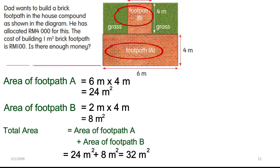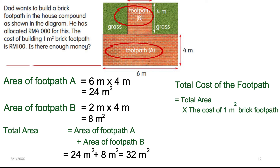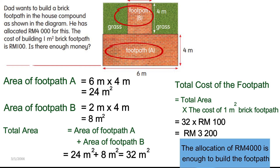The total cost of the footpath equals the total area of footpaths A and B multiplied by the cost of one square meter of brick footpath. So 32 square meters × 100 ringgit = 3,200 ringgit. The money allocated is 4,000 ringgit. Yes, that is enough — Dad only needs to use 3,200 ringgit out of 4,000 ringgit, so the money allocated is enough to build the brick footpath.